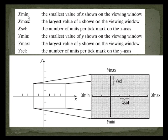What does all of this mean? Xmin means the smallest value of x shown on the viewing window. Xmax is the largest value of x. Ymax is the largest value of y shown on the viewing window, and ymin is the smallest. In this example, xmin is negative 2 and xmax is 4; ymax is 2 and ymin is negative 2.